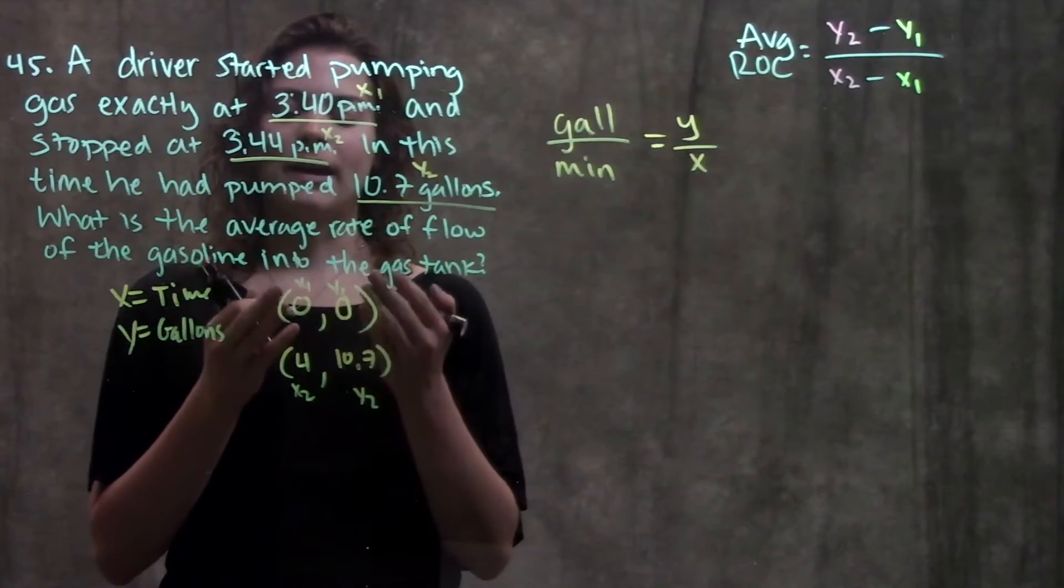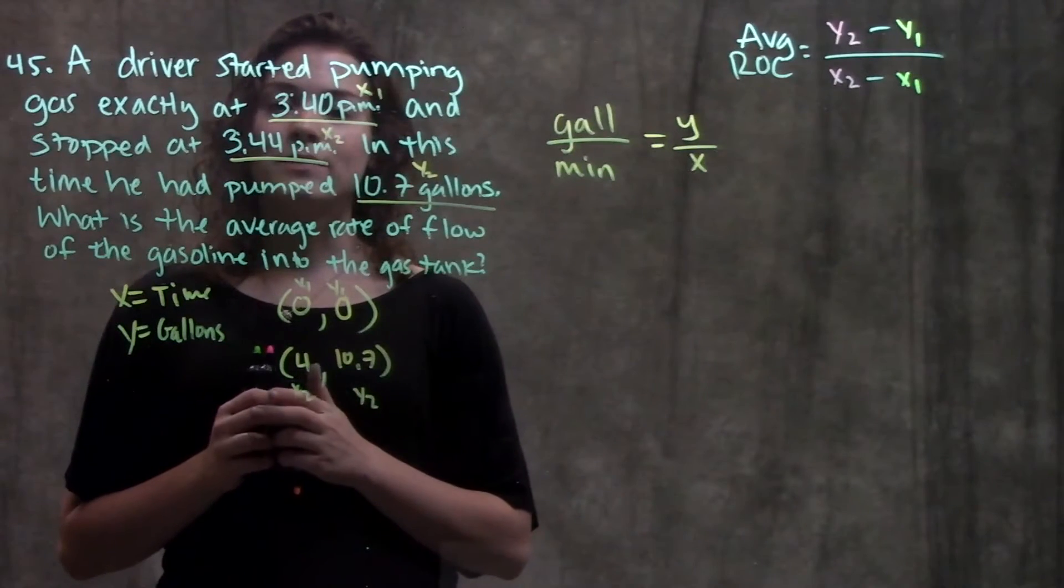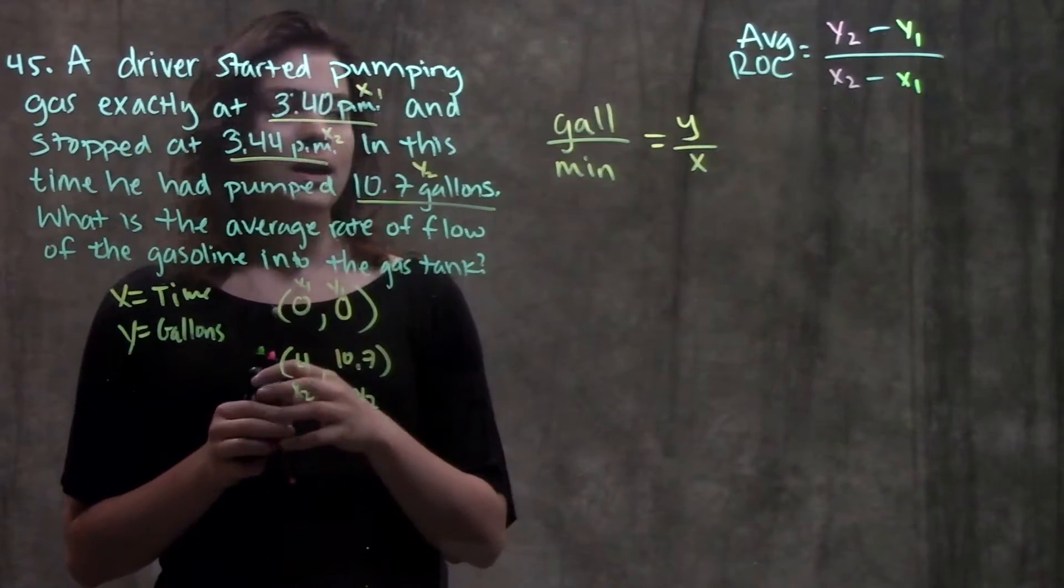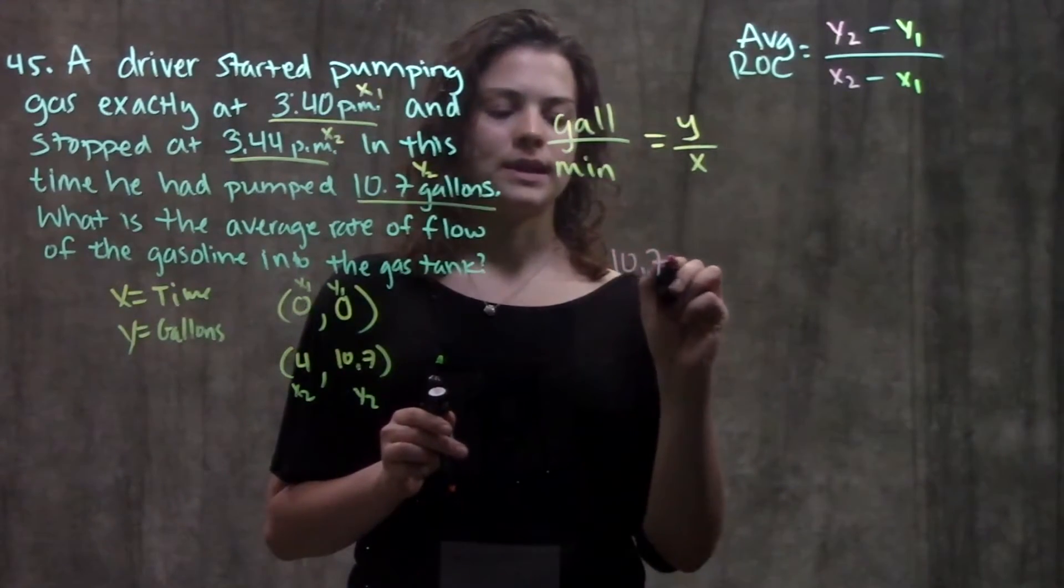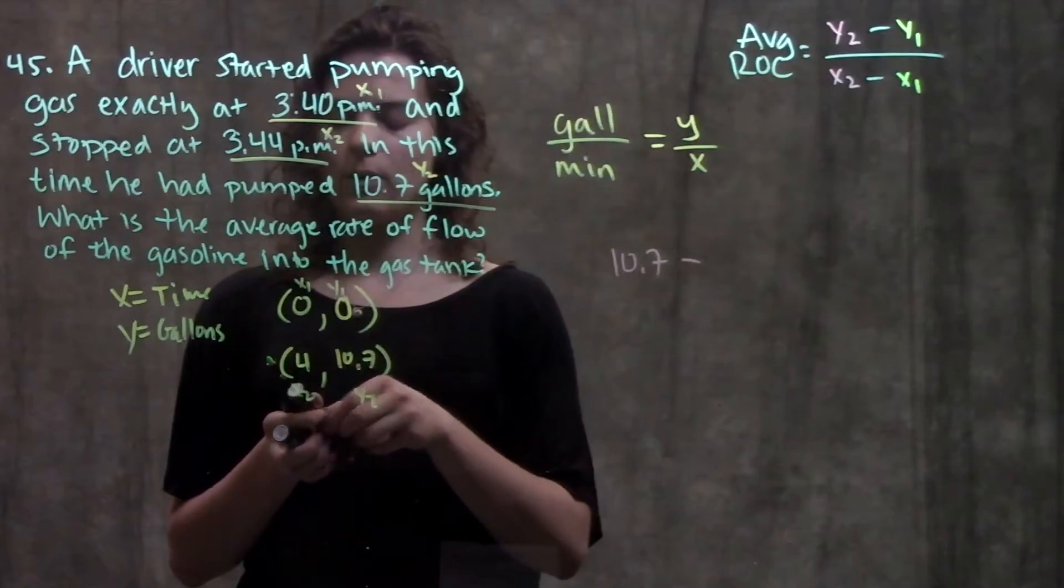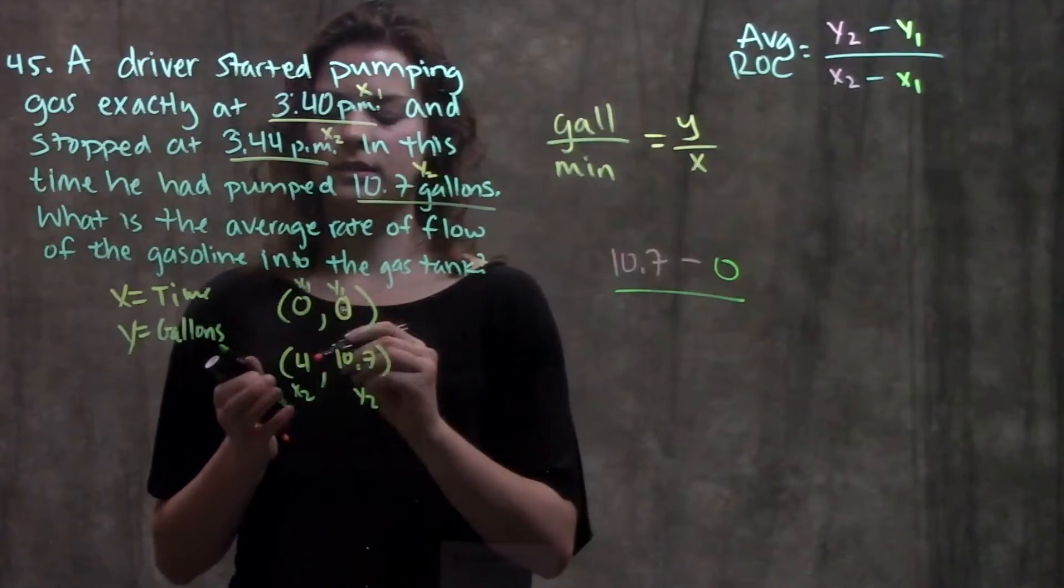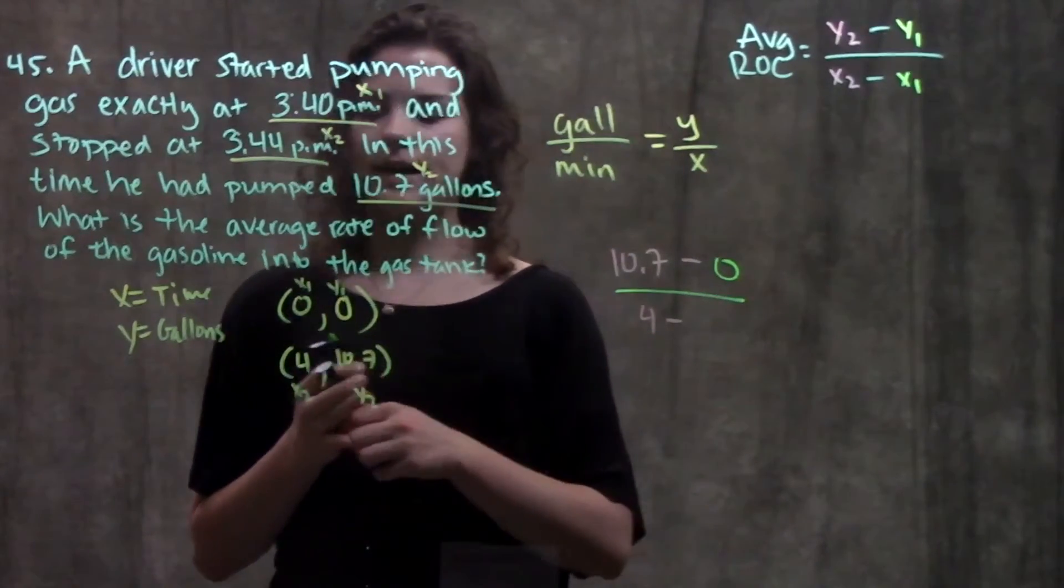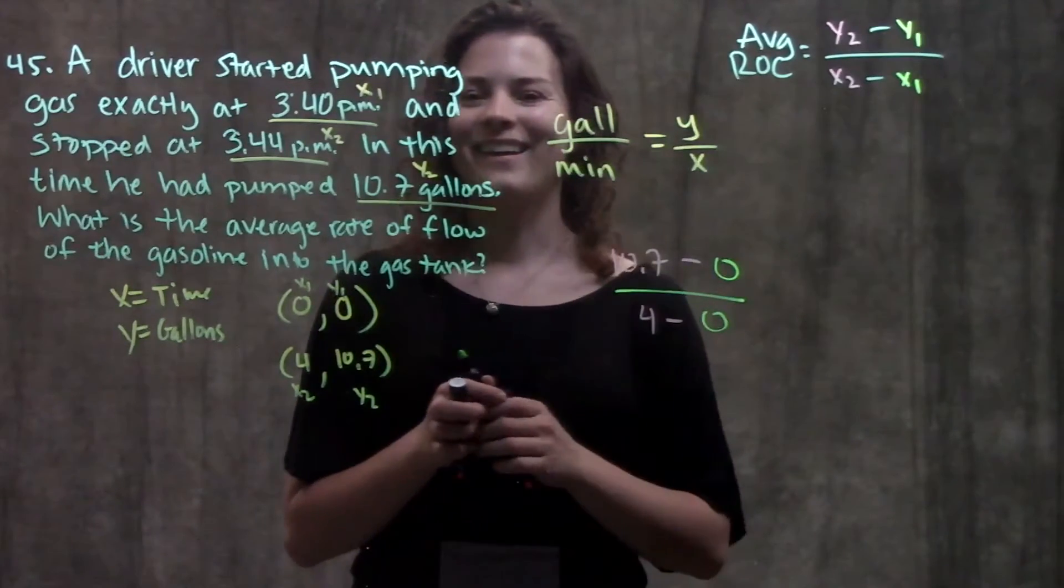Now I have my sets of x and y values. Now I can just plug these into my rate of change formula and solve. So I have that my y2 is 10.7. So I have 10.7 on top, minus my y1, which is zero. Over, on the bottom, my x2 is four, minus my x1 is zero.